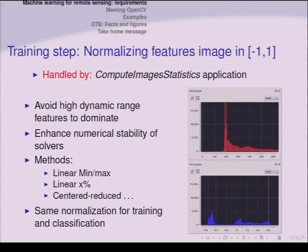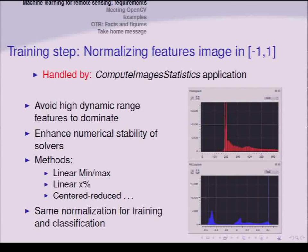We also need to normalize features. For instance, consider a histogram of an image: there's a tiny blue line which is an NDVI feature living between minus 0.6 and 0.6, alongside an image spectral band living between 200 and 600. If we use a classifier based on Euclidean distance, the spectral band feature will absolutely dominate anything we can infer from the NDVI. So to avoid this, we need to bring all features into the same range.